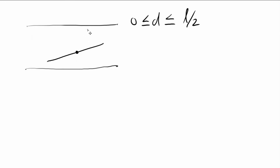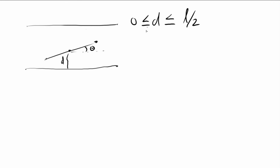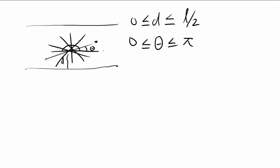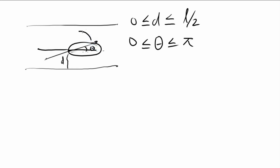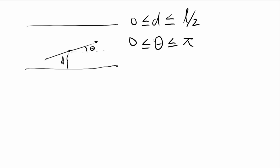Where the center of the needle falls is not the only parameter. The angle at which it falls is another parameter — we have theta, the angle at which the needle falls from the horizontal. Theta can be greater than or equal to 0 and less than or equal to pi. If you go past pi, this end just goes up again and theta goes back to 0. So the bounds of theta are from 0 to pi.